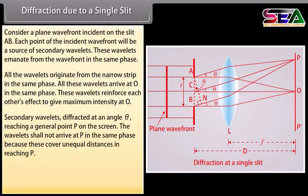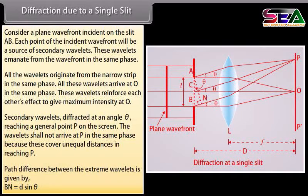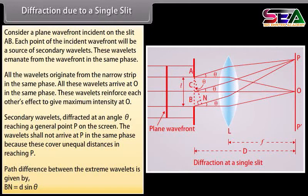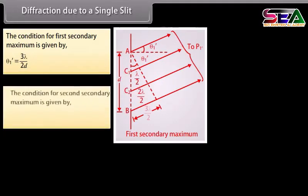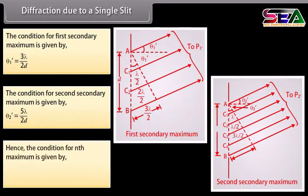Now consider the formation of secondary minima and secondary maxima. Secondary wavelets diffracted at angle theta reaching a general point P on the screen. The wavelets shall not arrive at P in the same phase because these cover unequal distances in reaching P. Path difference between the extreme wavelets is given by BN is equal to d sine theta. The condition for first secondary maximum is given at angle equals to 3 lambda upon 2d. The condition for second secondary maximum is given at an angle equals to 5 lambda upon 2d. Hence, the condition for nth maximum is given at an angle equals to 2n plus 1 lambda upon 2d.